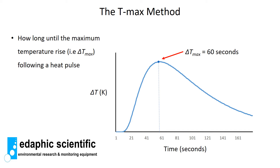With the tmax method, we are interested in knowing how long it takes for the maximum rise in temperature following a heat pulse. In this graph, delta T is on the y-axis and time is on the x-axis. At the origin, where we fire the heat pulse into the plant material, the temperature rises rapidly and reaches a maximum point. With the tmax method, we want to know what that time is — in this case, 60 seconds after the heat pulse.